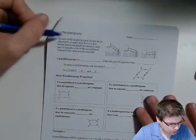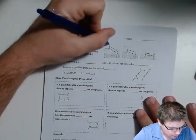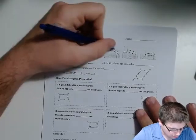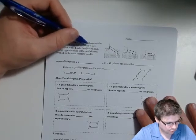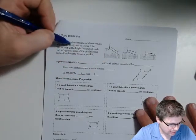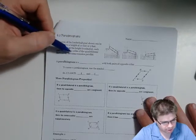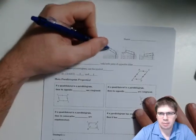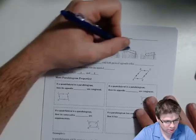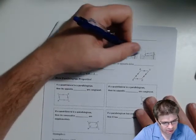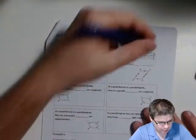They give us this little example to start with — the arm of a basketball goal. The arm that goes up to it can be adjusted to a height of 10 feet or 5 feet. Notice that as the height is adjusted, each pair of opposite sides in the quadrilateral formed by the arms remain parallel. It remains a parallelogram the entire way.